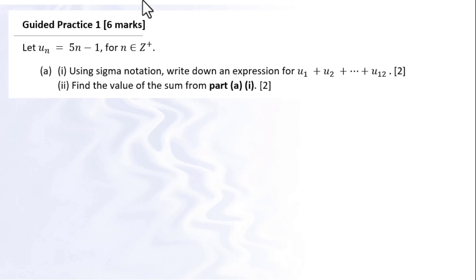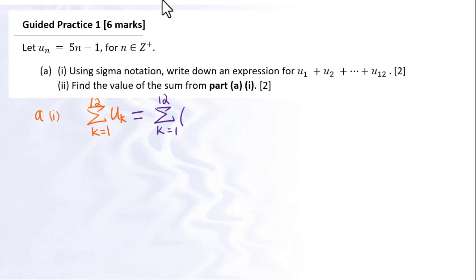Let u sub n equal 5n minus 1, for n being positive integers. Using sigma notation, write down an expression for u sub 1 plus u sub 2 until u sub 12. In sigma notation, k is from 1 to 12 of u sub k. This equals the summation k from 1 to 12 of u sub k, where u sub k is 5k minus 1.